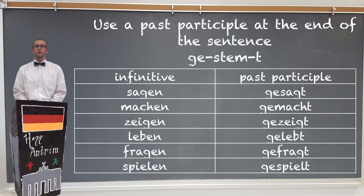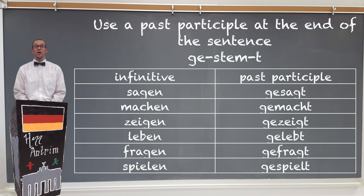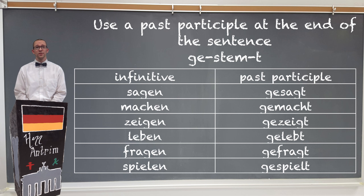In addition to using a form of Haben or Sein in each sentence, you're also going to need what is known as a past participle. Past participles in German are formed with regular verbs with a GE at the beginning of it, and a T at the end of the verb stem. This past participle is then shoved to the end of the sentence or clause, just like we did with the modal auxiliaries with the infinitives in those sentences.